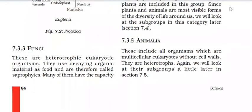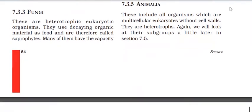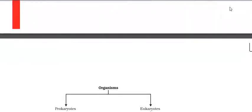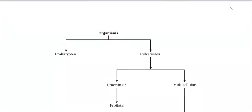Animalia are multicellular, eukaryotic, and without a cell wall — this is an important point. Plantae has a cell wall; Animalia does not. Animals are heterotrophs, so they obtain their food from other organisms.